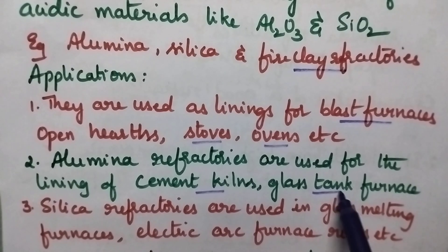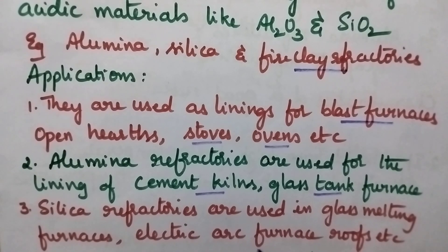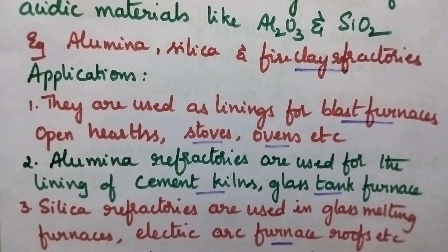Alumina refractories are also used for glass tank furnaces, whereas silica refractories are used in glass melting furnaces, electric arc furnaces, and roofs.